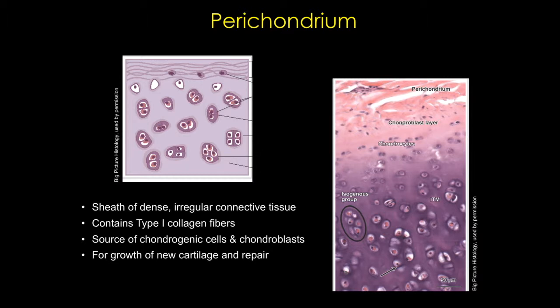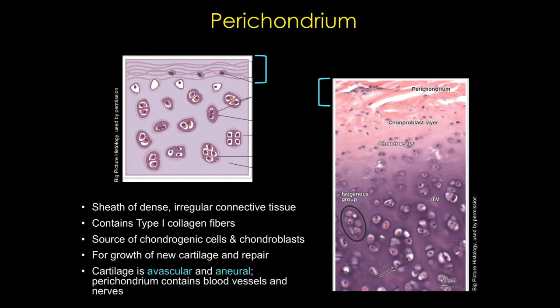A second feature of most cartilage is the perichondrium. This is a dense irregular connective tissue layer where fibroblasts secrete type 1 collagen fibers, indicated here with a blue bracket. The tissue has resident chondroblasts, blood vessels, and nerves, and the inner surface contains chondroblasts that differentiate into chondrocytes, move deeper, and then start to secrete matrix. The perichondrium is critical for the growth of new cartilage and repair. Since cartilage is avascular, the vasculature of the perichondrium supplies nutrients to and removes waste products from chondrocytes, which also limits cartilage thickness and repair.